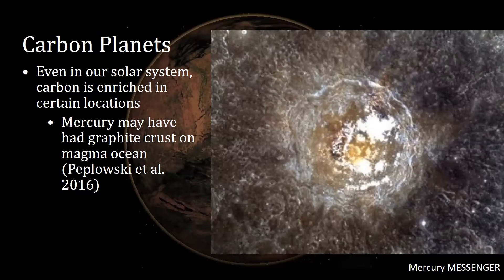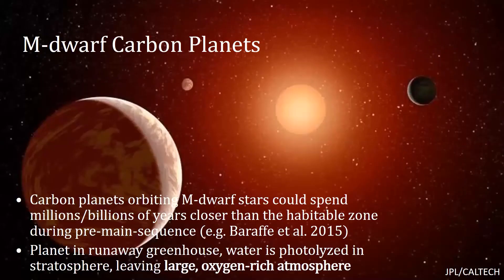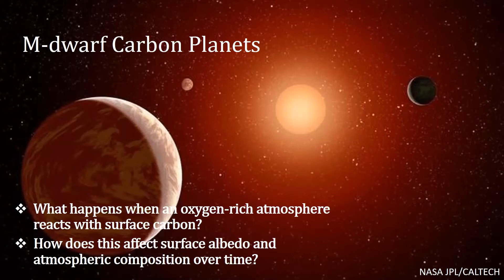This isn't a picture of graphite on the surface, but a crater that shows dark features around it — so I thought it's kind of like graphite. What may have occurred is a thin graphite crust on what could have been a magma ocean in the past on Mercury. If we look at the possibility of carbon planets around M dwarfs, it could turn out that these bodies spend millions or even billions of years closer than the habitable zone because of the ultraluminous pre-main sequence stage. A planet in that situation might be in a runaway greenhouse condition, in which case all the water on the surface ends up being sent to the upper atmosphere, the light hydrogen leaves, and leaves behind the oxygen. You could actually build a really oxygen-rich atmosphere under those conditions. What happens when an oxygen-rich atmosphere reacts with the surface carbon?